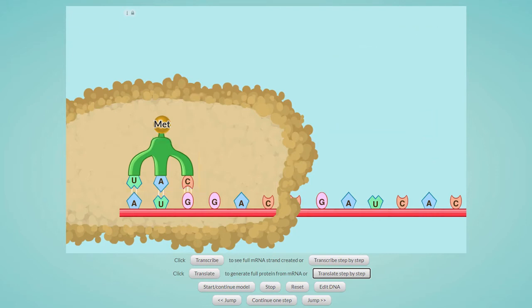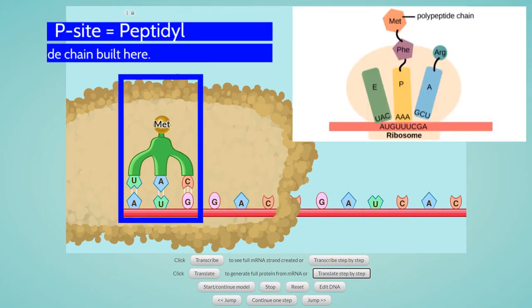The first tRNA carrying methionine is shown in the P site of the ribosome. P is short for peptidyl. This site holds the tRNA which is linked to the growing polypeptide, the chain of amino acids.